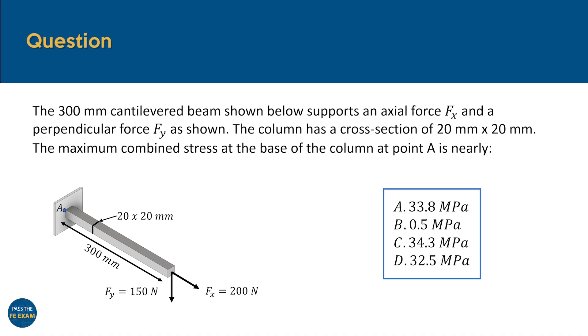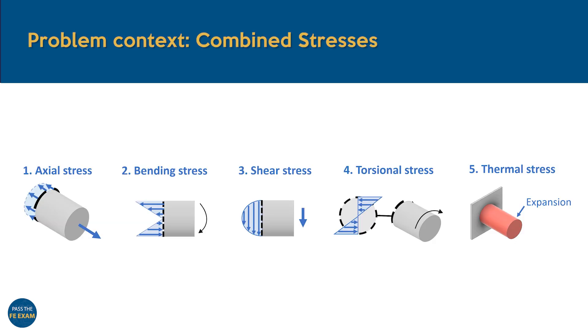In this scenario, we have a 300 mm cantilevered beam with a 20 by 20 mm square cross-section. One end of the beam is securely fixed while the other end carries two applied loads, an axial force Fx of 200 N and a perpendicular force Fy of 150 N. Our goal is to determine the maximum combined stress produced by these forces at the base of the beam, focusing specifically on point A. Before we jump into the solution, let's set the stage by exploring the concept of combined stress.